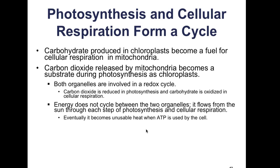Energy does not cycle between the two organelles — it flows from the sun through the metabolic pathways of photosynthesis and cellular respiration, and eventually becomes unusable heat due to the laws of thermodynamics: every energy transformation results in some energy lost as heat. This also gives an overview of the relationship between autotrophic and heterotrophic organisms. That is all for today — thank you and have a wonderful day.